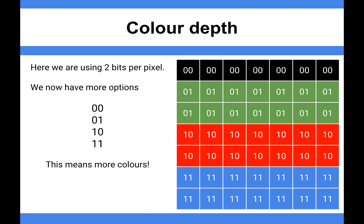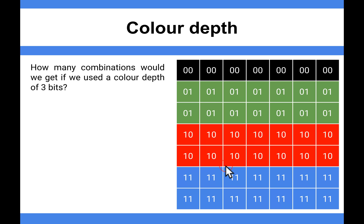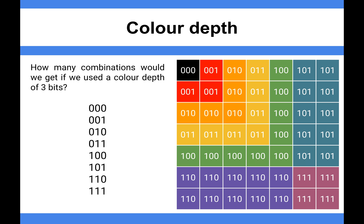If we go to three bits, we're going to have quite a lot more again. With three bits we've suddenly got eight colours — one, two, three, four, five, six, seven, eight. And you can see that the more colours, the better quality our image is going to be. Common colour depth when you take a picture with a digital camera can be 24 bits, which is a lot of colours.